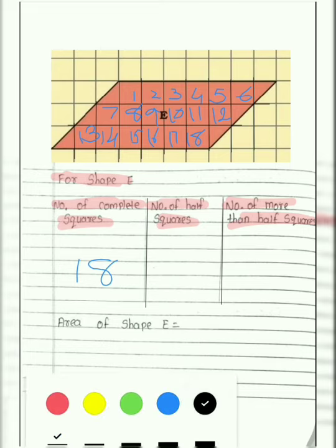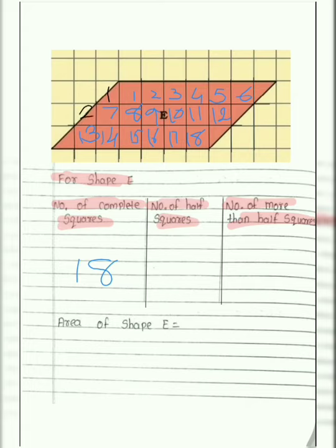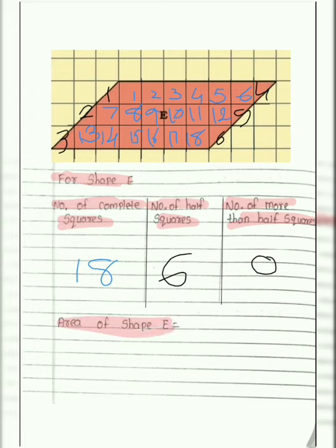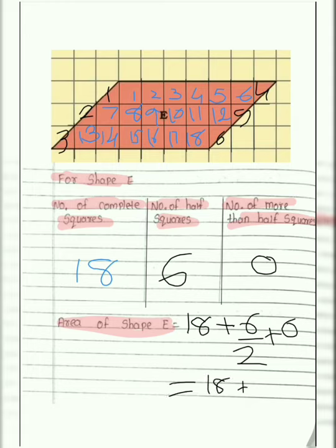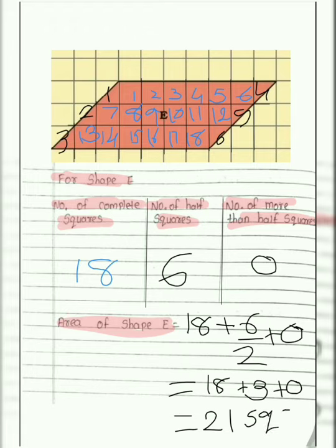Number of half squares — yes, there are half squares: 1, 2, 3, 4, 5, and 6. There are 6 half squares. Number of more than half squares? 0. Area of shape E equals 18 plus 6 divided by 2, plus 0. That is 18 plus 3 equals 21 square centimeters. Area of shape E is 21 square centimeters.